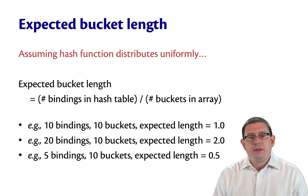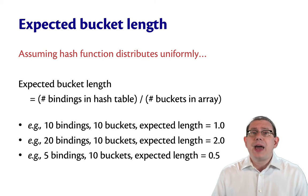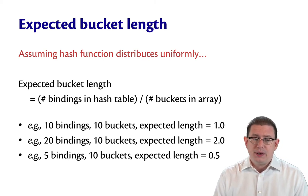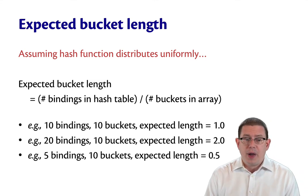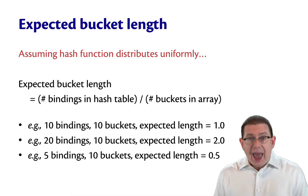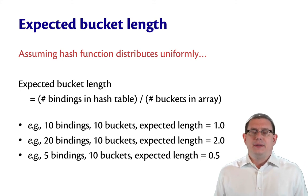Think about this in terms of the number of bindings in the table versus the number of buckets in the whole array. If the hash function is distributing keys uniformly over all the buckets, the expected bucket length is going to be the number of bindings over the number of buckets. So if you have 10 bindings in 10 buckets, then on average, the expected length of any bucket is just going to be one. You're not going to have to search any more than one element. That's great. That's constant.